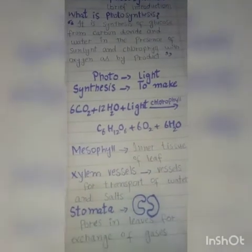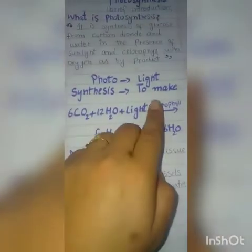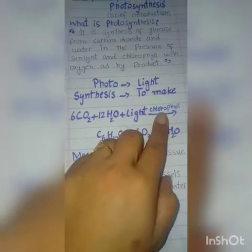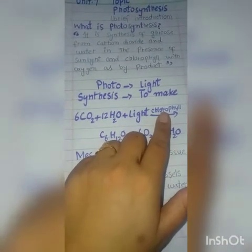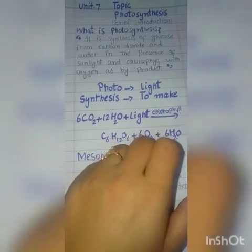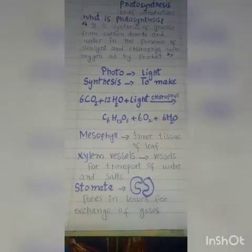This is the production of glucose using carbon dioxide and water, which uses sunlight and chlorophyll. Chlorophyll is a green pigment which is only found in plants. Chlorophyll can be made by plants.